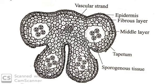Before that, what is meant by anther? Anther is the male sex organ of the plant. This is also called as microsporangium. Microsporangium is a part of the stamen. It encloses the pollen grain and the microspore. So in this video, you are learning about the structure of anther.